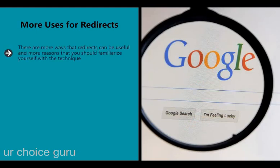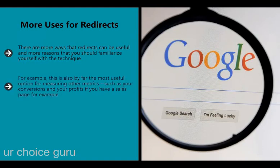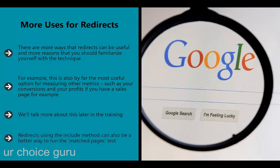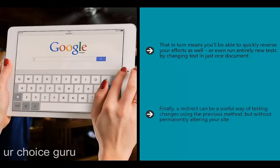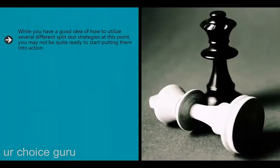There are more ways that redirects can be useful. For example, this is by far the most useful option for measuring other metrics such as conversions and profits from a sales page - if it's not ranking you're testing for, you can happily use the redirect method and see whether it impacts how users engage with your site. Redirects using the include method can also be a better way to run the matched pages test: rather than manually changing half the pages on your site, you use the include file to make the change once and insert it into half the pages. This also means you can quickly reverse your efforts or run entirely new tests by changing text in just one document.